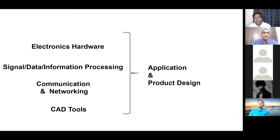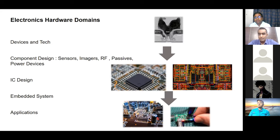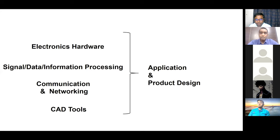Now let me go deeper into electronics hardware. A quick question — are all these topics studied in undergrad courses or are they specializations after graduation? Most of these things are covered at least as electives in undergrad. The electronic hardware part and the data processing and communication parts are mostly covered in an electronics and communication engineering course.